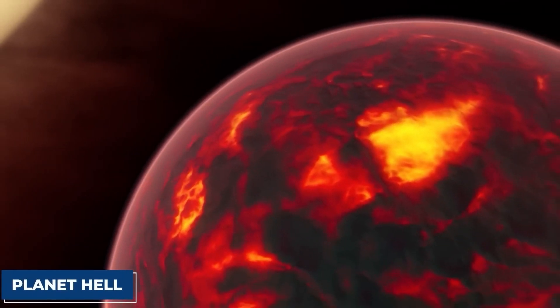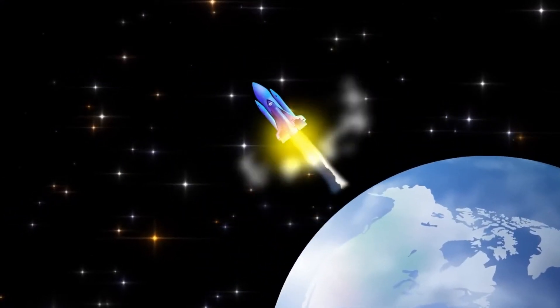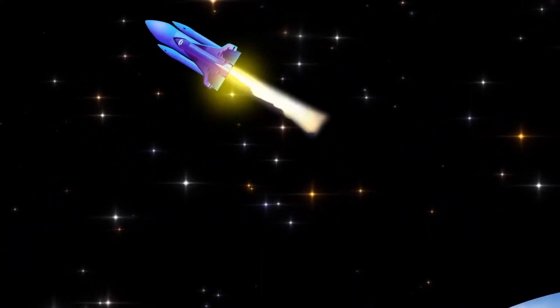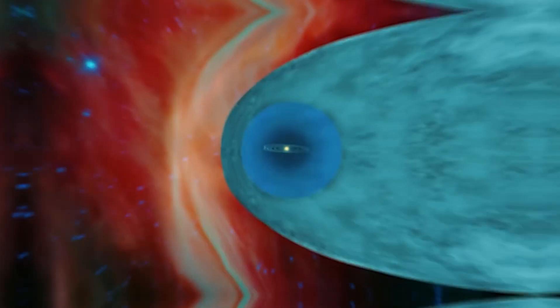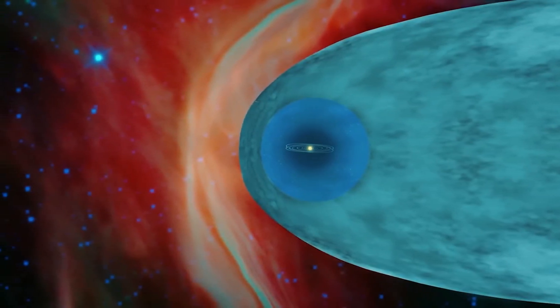It surpasses the sun in size by about 500 times. Despite its immense size, Betelgeuse pulsates, alternating between expansion and contraction. At its peak, it can grow to 800 times its average size.